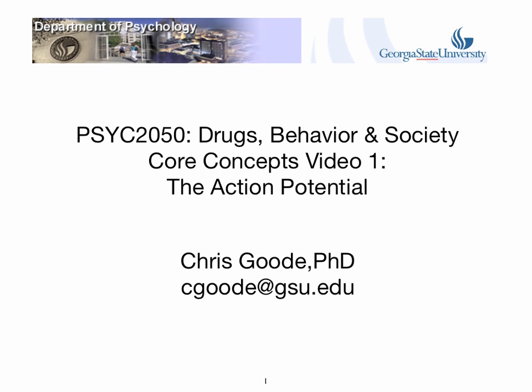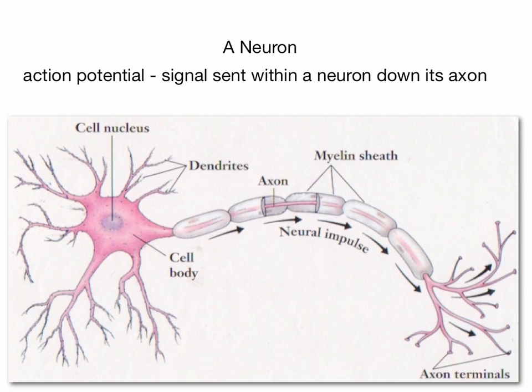Hi, welcome to the Core Concepts videos. This one's on the action potential. So neurons really do just two jobs. They send a signal along their axon and on to another neuron, and they receive signals from other neurons. Now the signal that goes down their axon is called the action potential. And then the communication between neurons is mediated by neurotransmitters. Today we're just talking about the action potential.